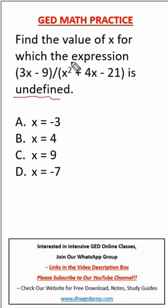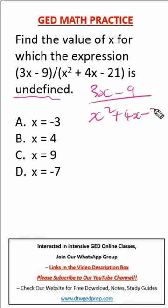Let me quickly share with you how you can solve this. It says find the value of x for which the expression (3x - 9)/(x² + 4x - 21) is undefined.